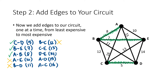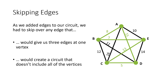Next up is C to E — that edge doesn't create three edges at one vertex and doesn't create a circuit missing vertices, so that one's okay. What about D to E? That creates three edges meeting at E, and also creates a circuit that only includes C, D, and E — so for two different reasons we can't use it; put an X there. Finally, we have the edge from A to D, and I can include that with no issues. And now I'm done — I have a Hamiltonian circuit that includes all the vertices without visiting any vertex more than once. I never even got to think about the last edge from A to C.